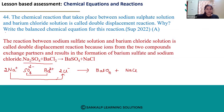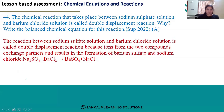They are also asking us to write the balanced chemical equation. Let's see if the reaction is balanced or not. How many sodium atoms are there? Two atoms on the reactant side and one on the product side. Sulfur: one on the reactant side and one on the product side. Oxygen: four atoms on the reactant side and four on the product side. Barium: one on the reactant side and one on the product side.